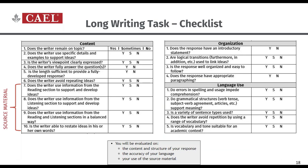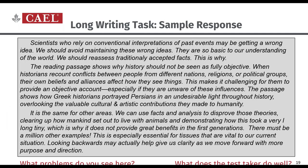Looking at the checklist, there are three main categories. Content is covered under content points, structure is covered in organization, accuracy of language is in language use, and your use of the source material corresponds to the last four points under content. This checklist will be in your study package later today — it's an excellent tool to help you prepare. We'll come back to it when we look at a sample. This sample essay has been created to demonstrate the most common mistakes test takers make, and together we're going to identify and fix those mistakes.